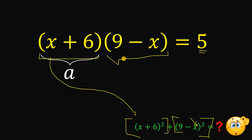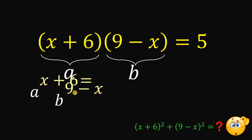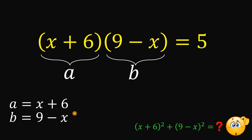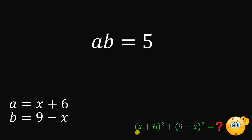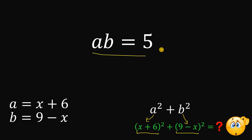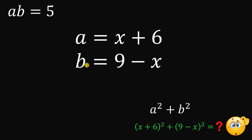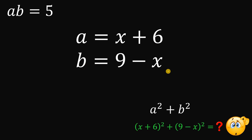Let's have x plus 6 be equal to a, and 9 minus x be equal to b. So we know that a equals x plus 6 and b equals 9 minus x. Our given equation then becomes a times b equals 5. And since we set x plus 6 equal to a and 9 minus x equal to b, our goal becomes to find the numerical value of a squared plus b squared.